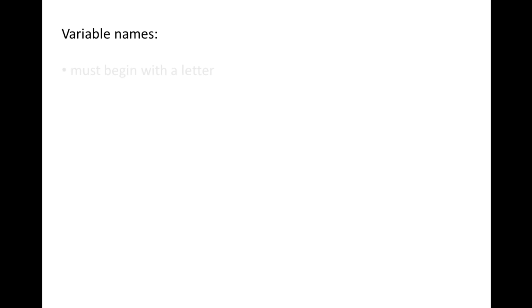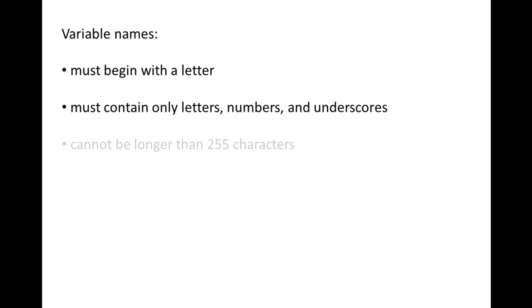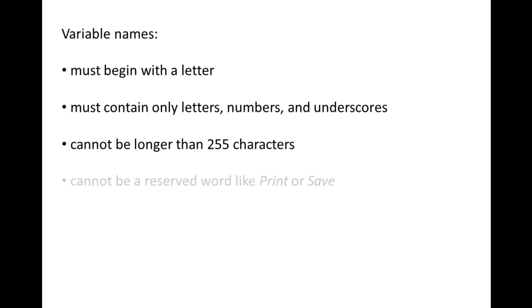There are rules for naming variables. Variable names must begin with a letter. The rest of the variable name may contain only letters, numbers, and underscores. No other symbols are allowed. Variable names cannot be longer than 255 characters, and variable names cannot be one of the special reserved words like print or save.